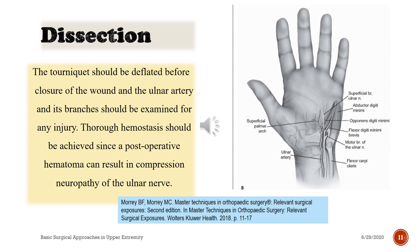The tourniquet should be deflated before closure of the wound and the ulnar artery and its branches should be examined for any injury. Thorough hemostasis should be achieved since a postoperative hematoma can result in compression neuropathy of the ulnar nerve.